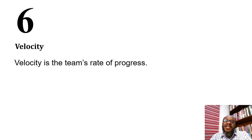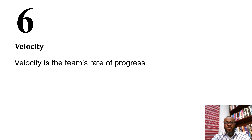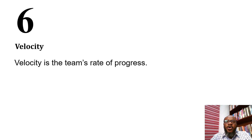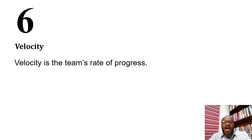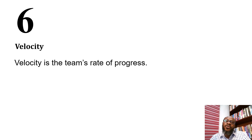The next concept is team velocity. Velocity is the team's rate of progress. Understanding the development team's rate of progress is important for sprint planning, so we know how to assign work. It's not good when the team is overburdened — that can lead to burnout and loss of morale — nor should they be underwhelmed. Knowing the team's velocity allows us to plan work accordingly.